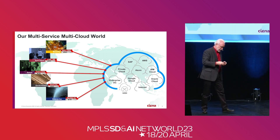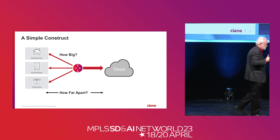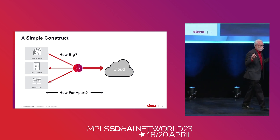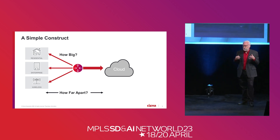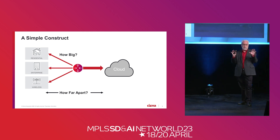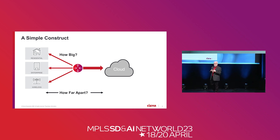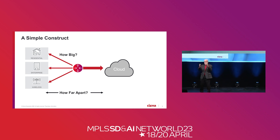The question is, how do you actually build this thing? When you have something as complicated as the edge of the network and the metros of the network — which are vastly complicated network infrastructure — sometimes it helps to step way back and look at it with a really simple construct. You say, okay, I've got residential, I've got enterprise, I've got wireless, I've got to get to the cloud. How far apart can that be, and how big are those connections?